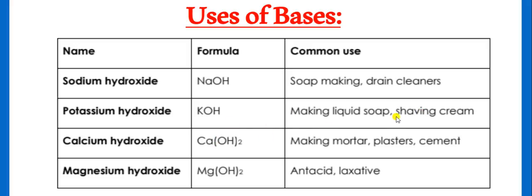You will see that this is only potassium hydroxide. Sodium hydroxide is not used. And calcium hydroxide making mortar, plasters, cement and magnesium hydroxide. We have already discussed it. As an antacid used. It is called Milk of Magnesia and Laxative.